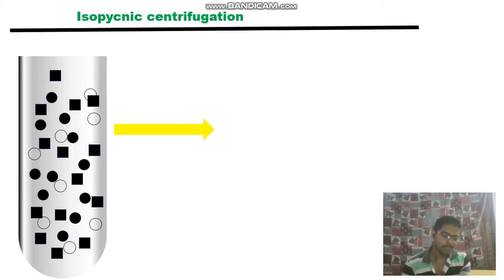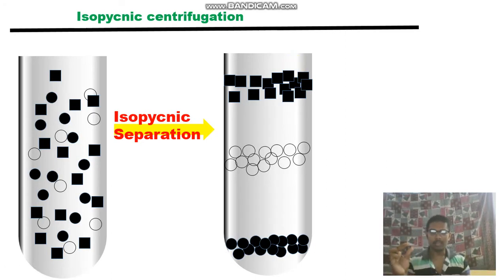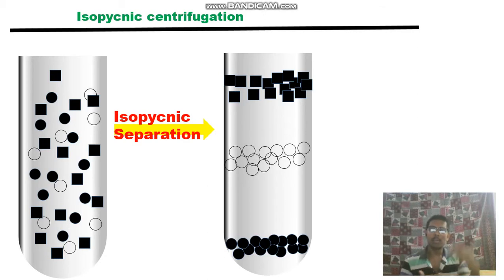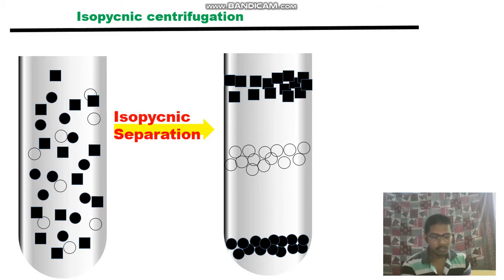This gradient is called the isopycnic gradient. After isopycnic separation, you also end up with zones — similar to rate-zonal centrifugation — but in this case, the zone contains particles that have the same density as the surrounding solution. In rate-zonal centrifugation, that criterion was not satisfied: particle density was always greater than the density of the gradient media. In isopycnic centrifugation, particles are separated according to their buoyancy.